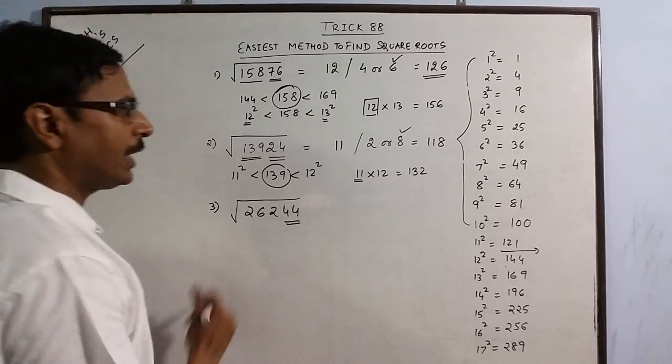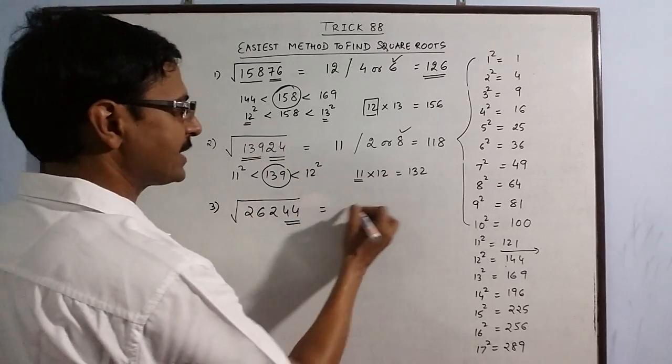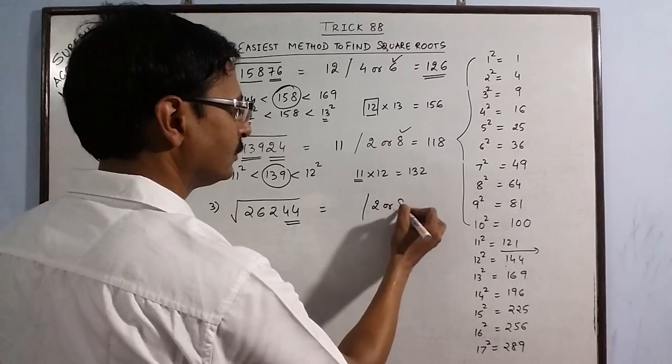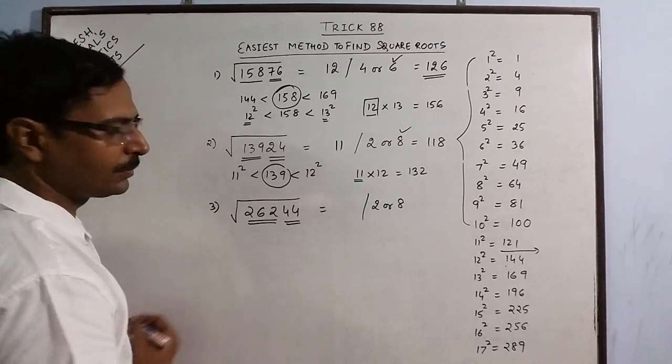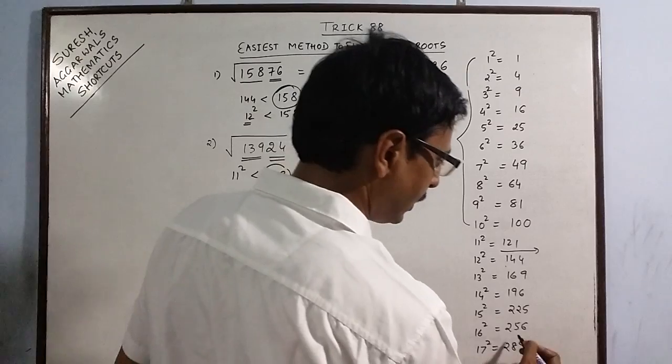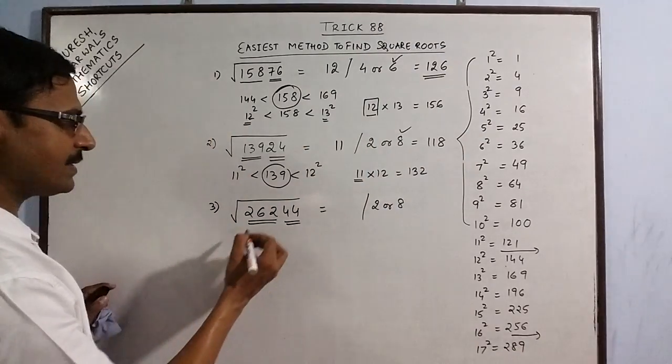Say we have a more larger number this time, 26244. Now 44, again 4, so you have the second part as 2 or 8. This is 262. Now 262 lies between 16 square and 17 square.